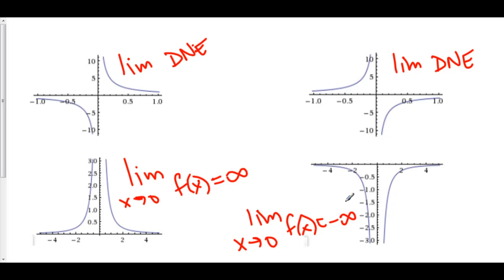The whole idea behind the vertical asymptote analysis is we're going to assume that on both sides our function is diverging to either infinity or negative infinity. The question is which. So for our analysis, we are going to take the limit as our number approaches from the left-hand side, and take the limit as our number approaches from the right-hand side, and see whether our function is approaching infinity or negative infinity from both sides. If they both approach infinity, our limit is infinity. If they both approach negative infinity, our limit is negative infinity. However, if one goes to infinity and the other goes to negative infinity, then the limit does not exist.